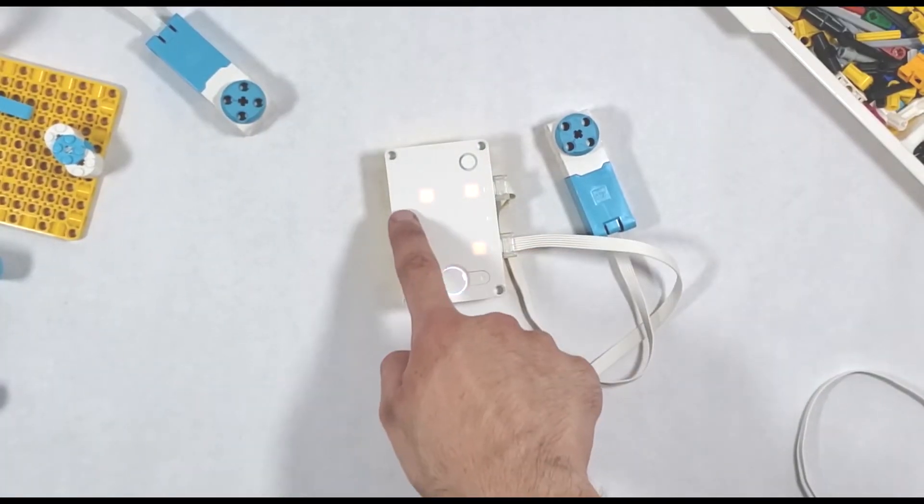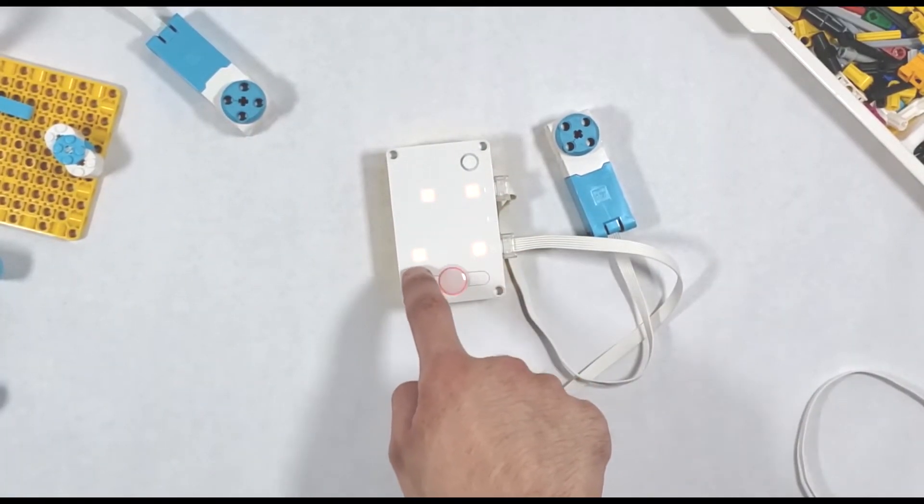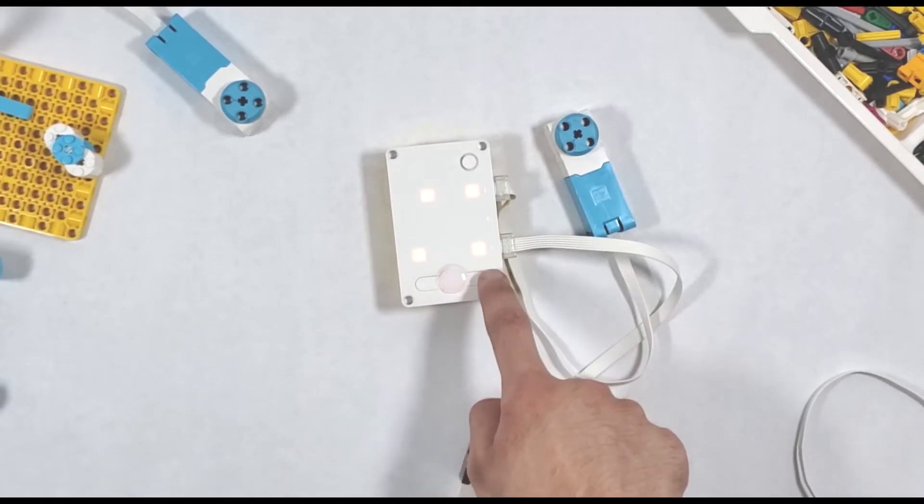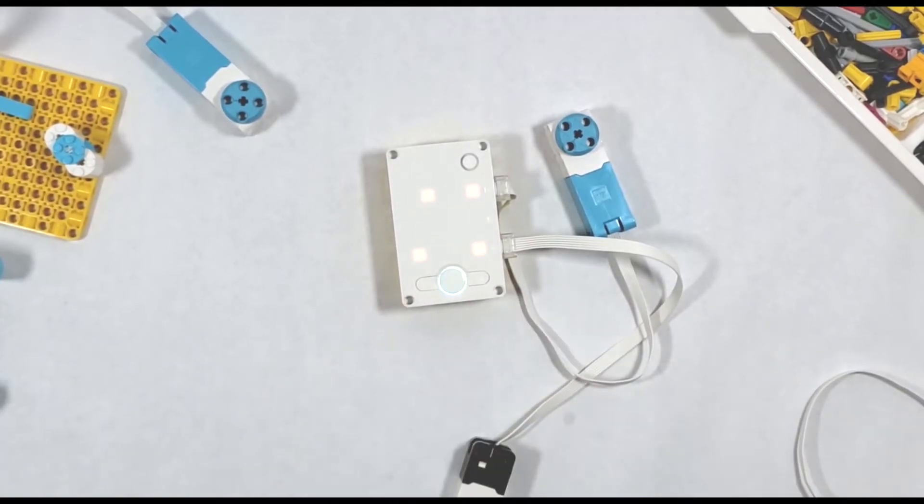The light seems to be traveling into the port with the motor and out of the port with the sensor, and that's because sensors send instructions whereas motors receive them.